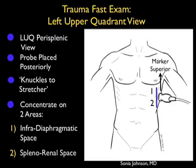Position the probe in the long axis view with the probe marker towards the patient's head, at about the mid-axillary line or posterior axillary line, with your knuckles almost touching down to the bedside. We'll concentrate on two areas: most importantly, the area above the spleen and below the diaphragm, where fluid will preferentially accumulate, but rounding out our exam, we'll look inferior at that splenorenal space.